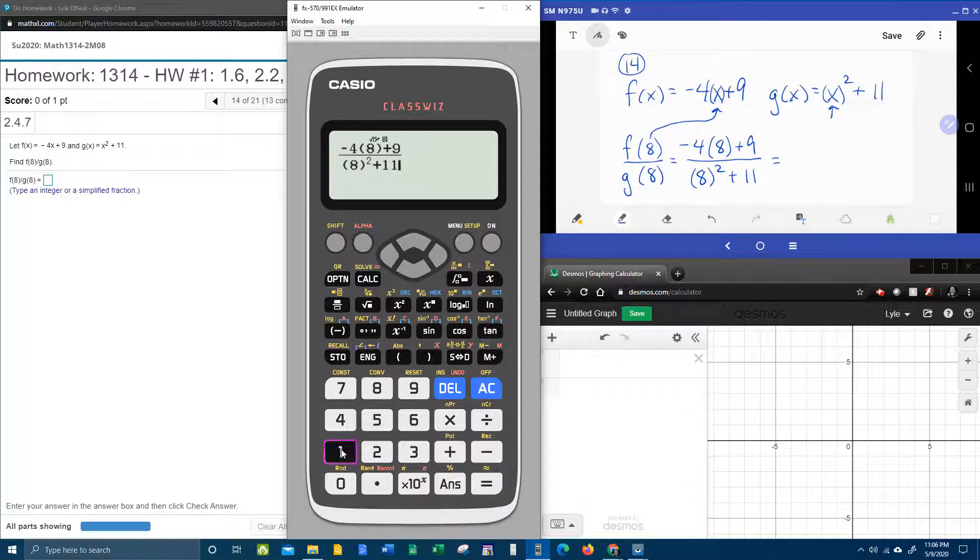Plus 11 equals negative 23 over 75. And just so you know, this particular calculator will give fractions reduced to lowest terms. So you don't have to worry about whether this reduces or not.